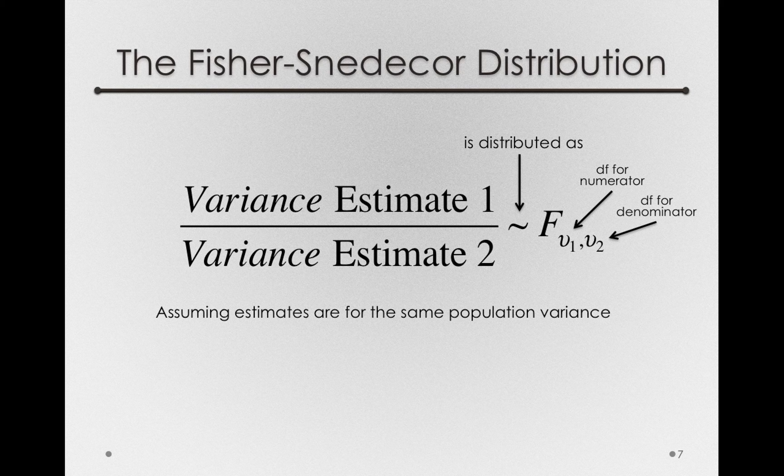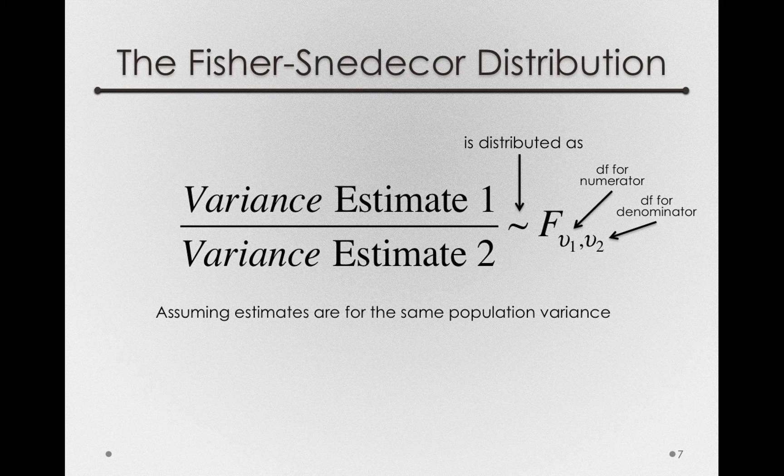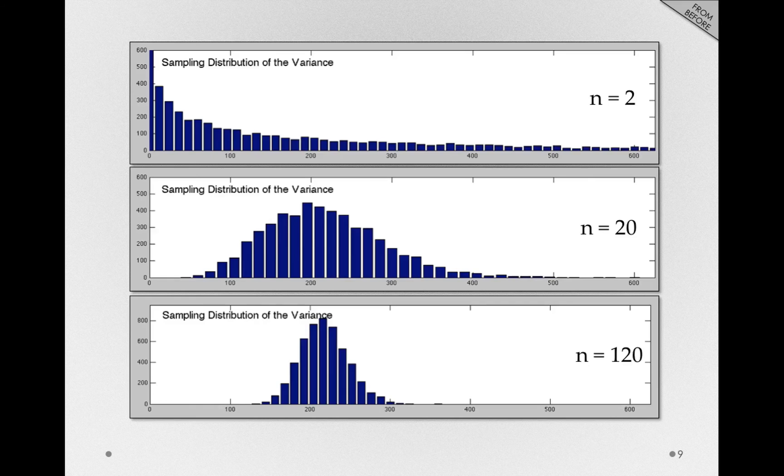When we looked at estimating the population variance, I even showed you some sampling distributions of variance estimates. Here are some representations of those. When we have small sample sizes, as we do in the top, the sampling distribution of the variance, you might recall, had that very large skew. That is, we were likely to get very small estimates of the variance, but we would actually have some very large estimates some of the time.